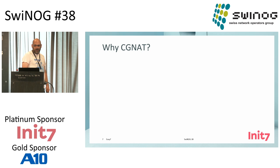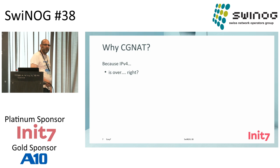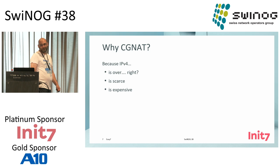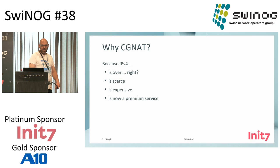Why CGNAT? Why not just give public IPv4? Because IPv4 is over — or at least very scarce — and it's not getting better. It's expensive and it is a premium service now. A lot of ISPs in Switzerland will, on your standard service, just put you behind CGNAT. That's just the way it is now.